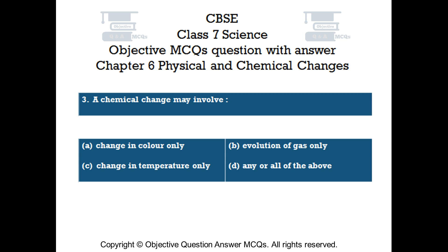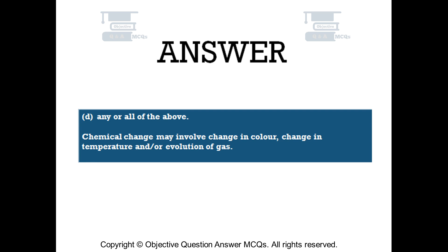Question number 3. A chemical change may involve: Option A: Change in Color Only. Option B: Evolution of Gas Only. Option C: Change in Temperature Only. Option D: Any or All of the Above. The right answer is Option D: Any or All of the Above. A chemical change may involve change in color, change in temperature, and/or evolution of gas.